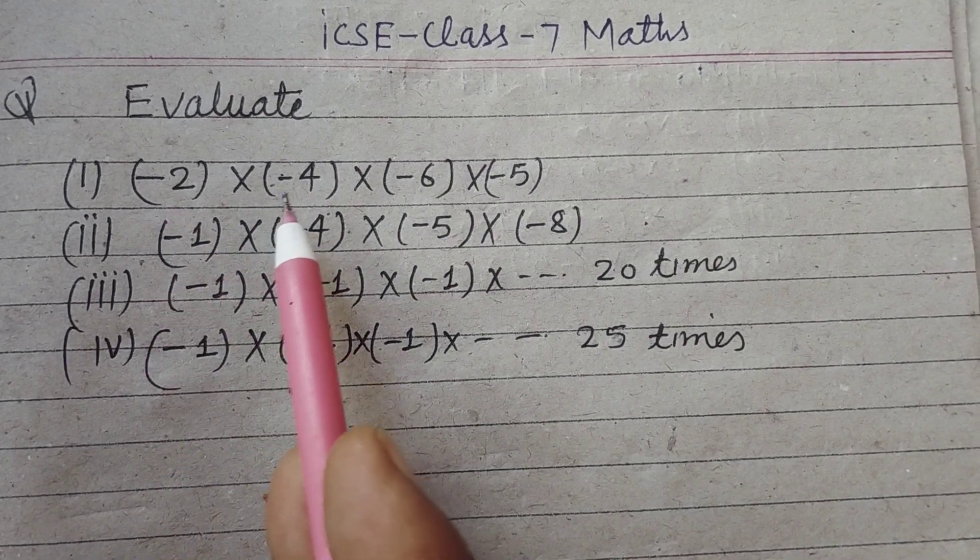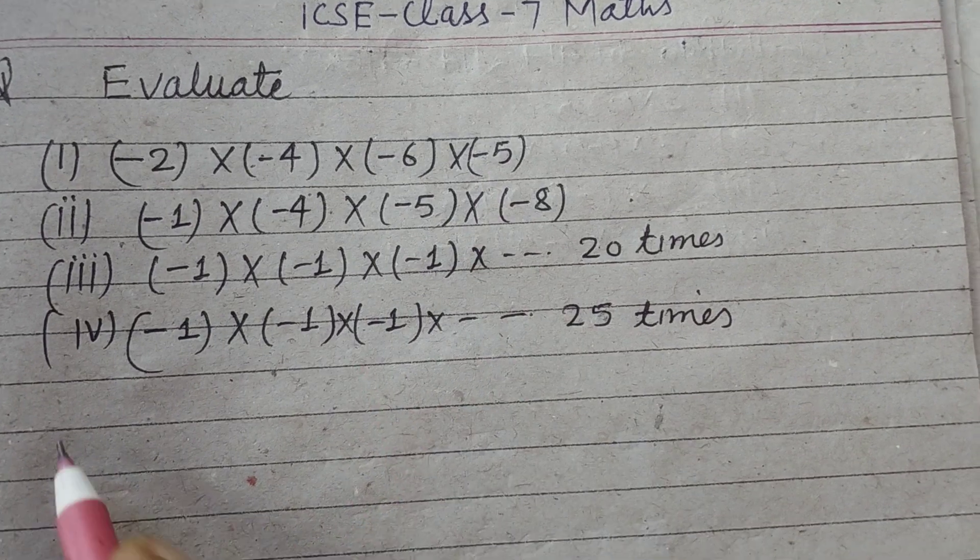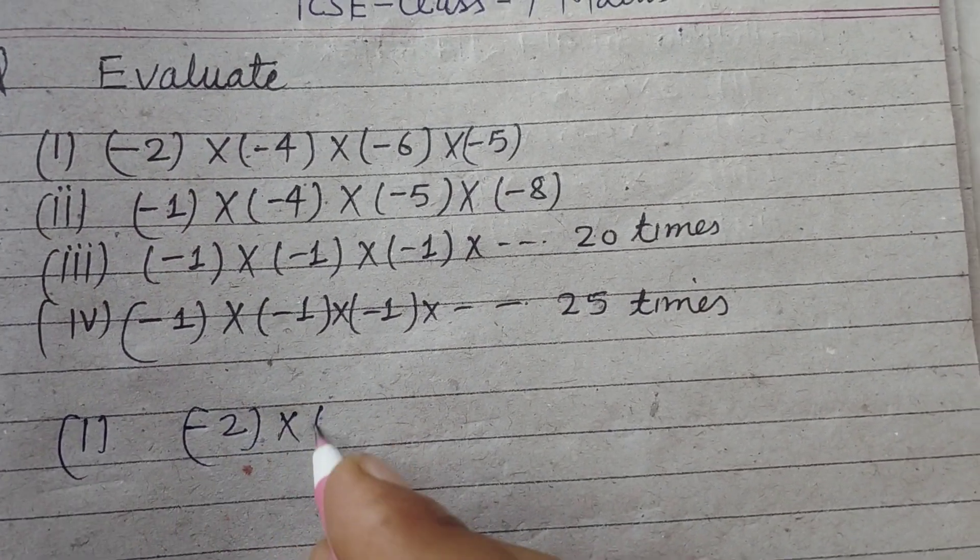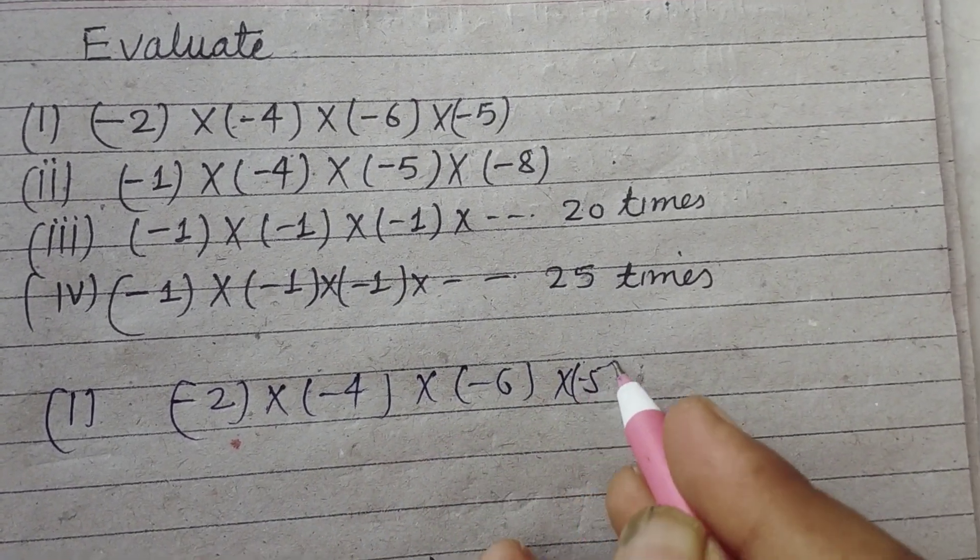Evaluate (-2) × (-4) × (-6) × (-5). So first is (-2) × (-4) × (-6) × (-5).